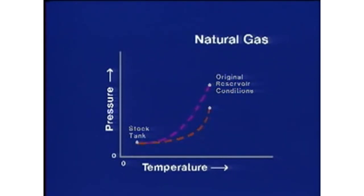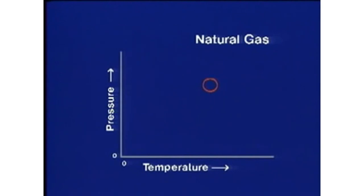Natural gas is the easiest to discuss. Gas expands as the pressure is reduced and contracts as the temperature is reduced. As an example, a gas with a specific gravity of 0.7 relative to air at a reservoir pressure of 5,000 psi and a reservoir temperature of 200 degrees Fahrenheit will expand by a factor of about 270 as it comes to surface conditions. Of course, this figure will change as the reservoir conditions or gas gravity changes.